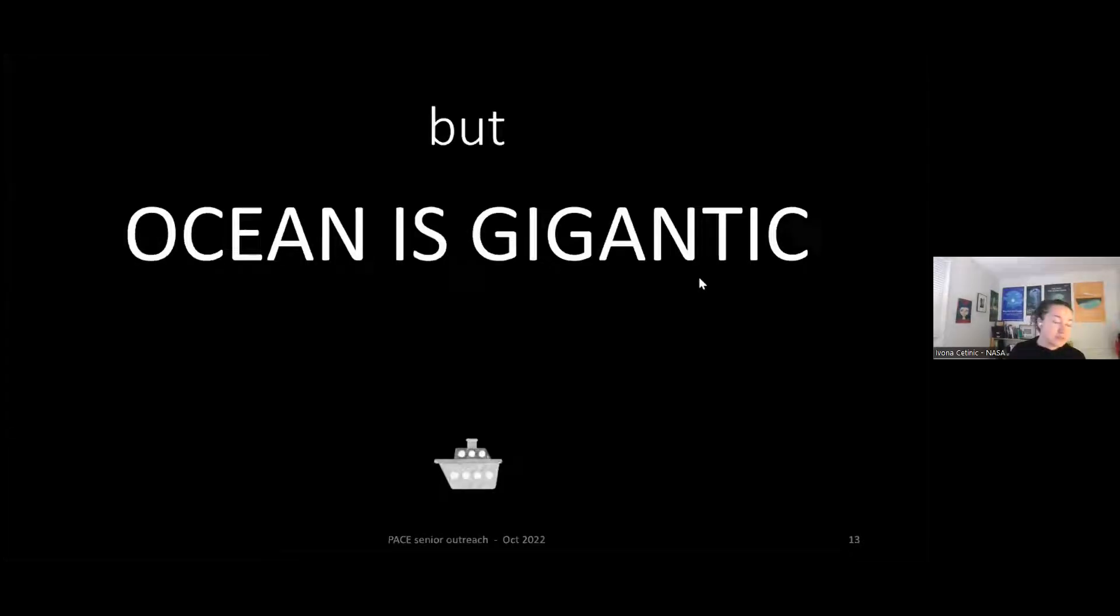But ocean is gigantic. As I said, ocean is 71% of the surface of the Earth. And we have only so many research ships. We can't be everywhere and all the time. And ocean is very diverse. And ocean is very changing, fast-changing. So going with the ships cannot give us the synoptic view of the ocean, which we want. And this is where we rely on ocean color.